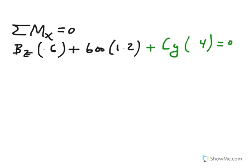But remember, we already calculated C sub Y to be negative 400. So if I put that negative 400, I can go ahead and solve for B sub Z here. So B sub Z happens to be negative 933, roughly, newtons.